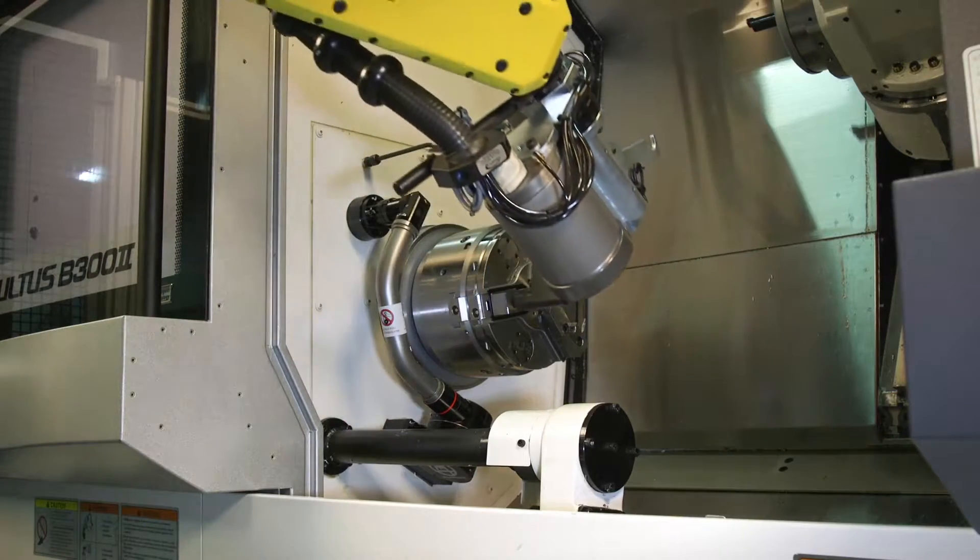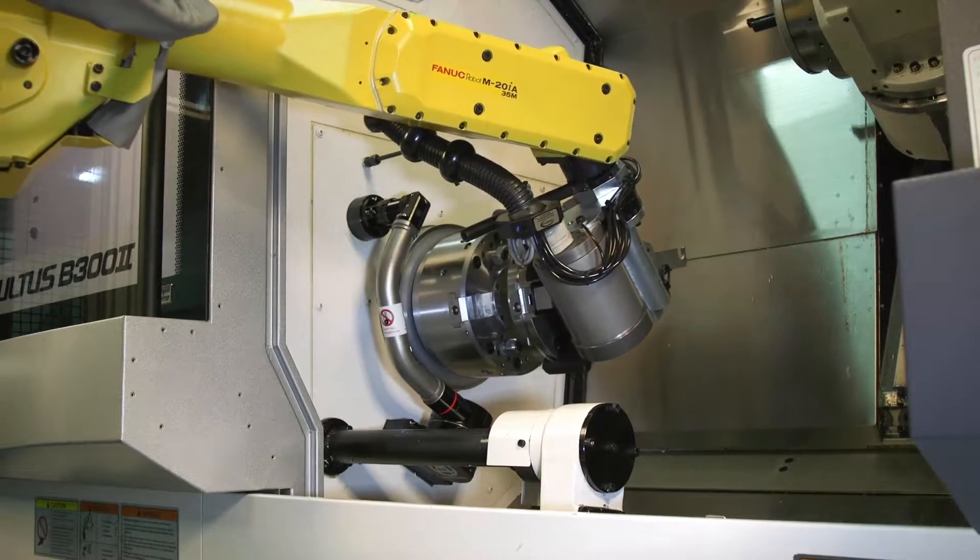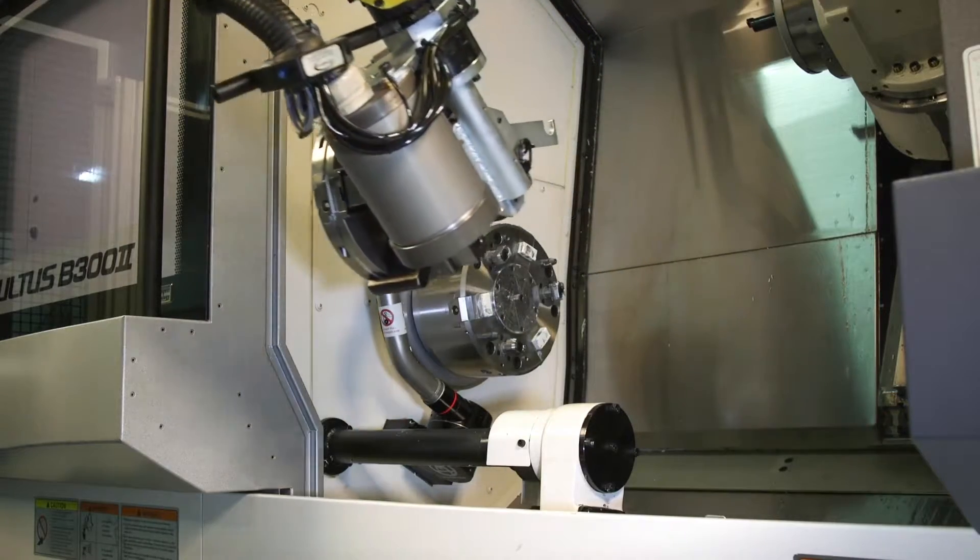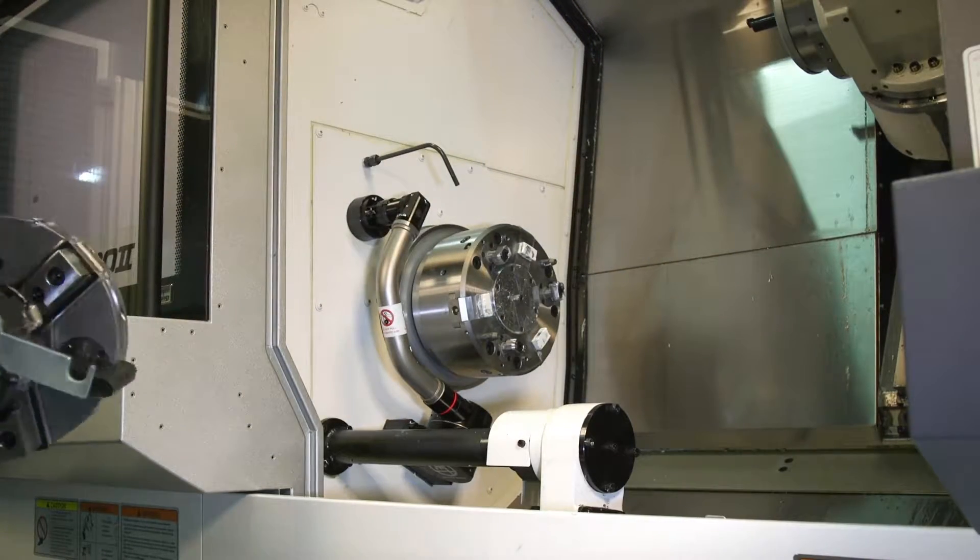The Grippers also allow the robot to change the pallets for the workholding for as many parts as to be machined, allowing total unattended management of both part and workholding handling.